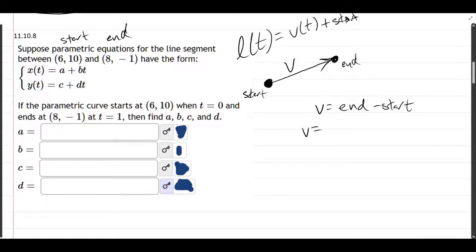So v equals end minus start. Our end is (8, -1) minus start (6, 10). 8 minus 6—and it's turning into a vector, it's not a point anymore—8 minus 6 is 2. Negative 1 minus 10 is negative 11.